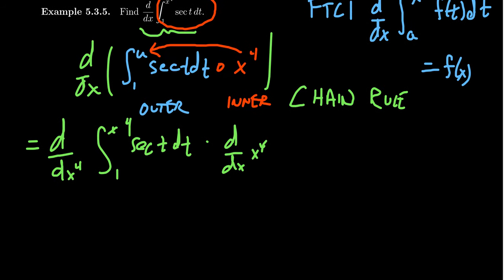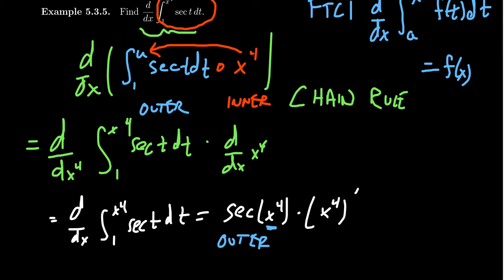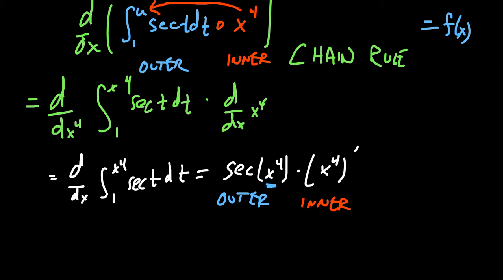Starting this over: when we take the derivative of the integral from 1 to x to the fourth of secant(t) dt, by the chain rule we take the derivative of the outer function with respect to x to the fourth. This gives us secant of x to the fourth — you get the integrand but must insert the upper limit of the integral for t. Then multiply by the inner derivative, which is the derivative of x to the fourth.